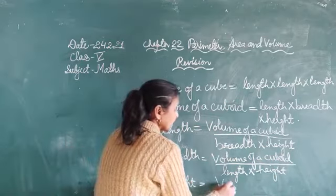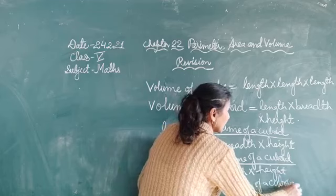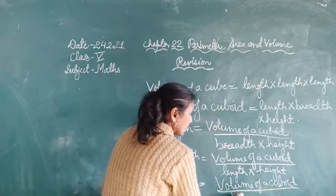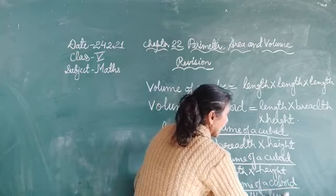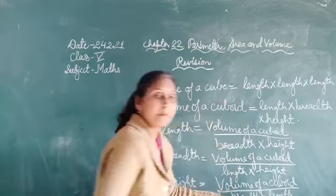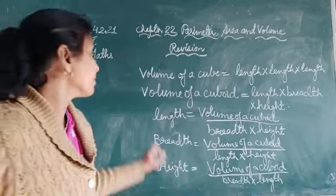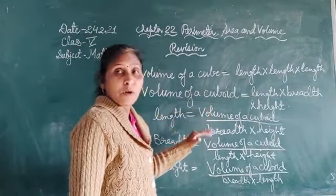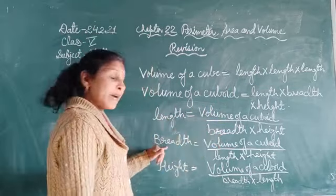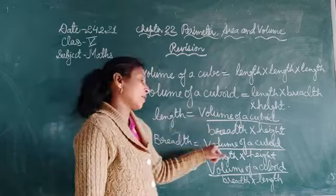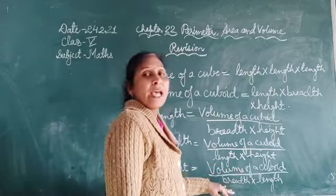To find the height of a cuboid, the formula will be: volume of a cuboid divided by breadth multiplied by length, or we can say length multiplied by breadth. So if we have learned the main formula, we can rearrange it to find length, breadth, or height as needed.